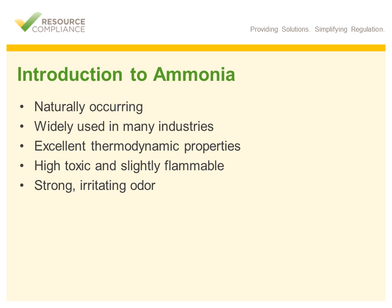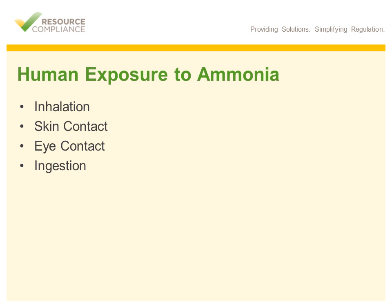Ammonia's odor is so strong that most people detect ammonia at concentrations well below dangerous thresholds. Humans can be exposed to ammonia in a variety of ways. There are four types of ammonia exposure that can occur: inhalation, skin contact, eye contact, and ingestion. As a chemical, ammonia is very attracted to water. As a result, when exposure occurs, ammonia tends to migrate toward the moist areas of the body — eyes, mouth, throat, neck, and armpit.